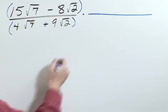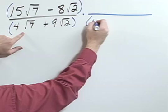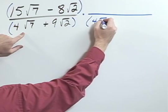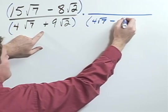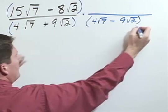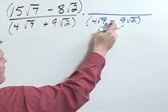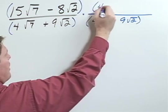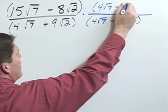In this case I'm going to use the conjugate. So the conjugate of this would be 4 square root of 7 minus 9 square root of 2. And if I multiply the denominator I have to multiply the same for my numerator.